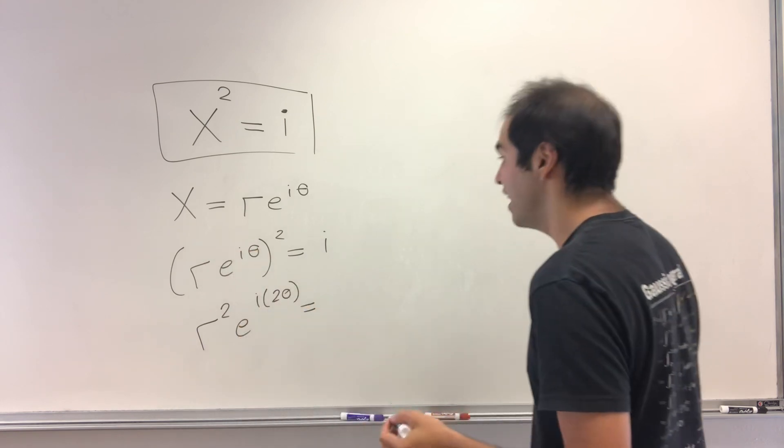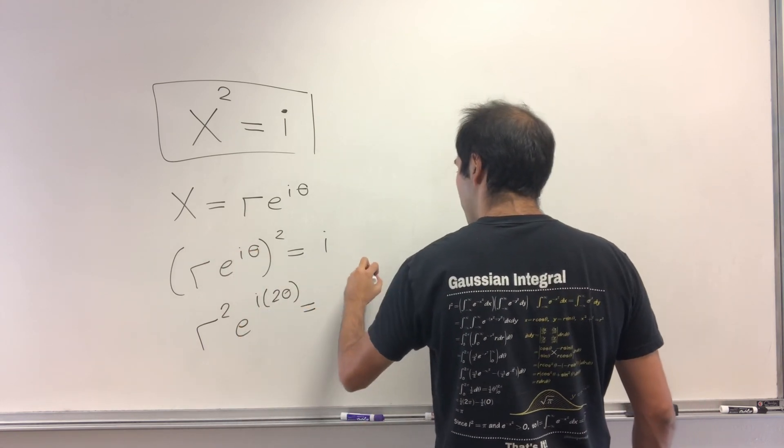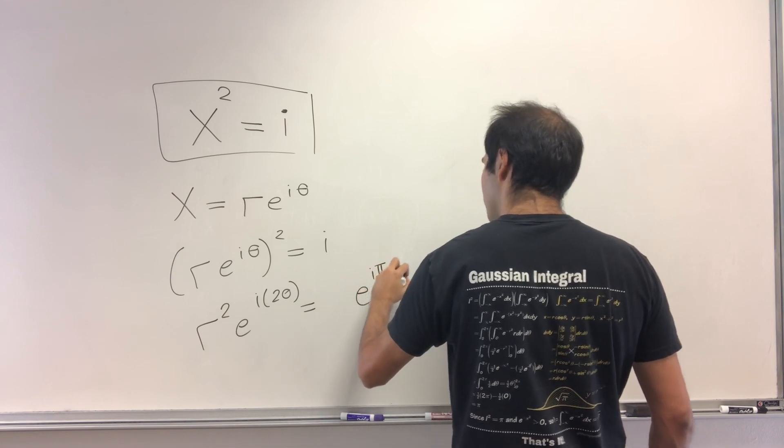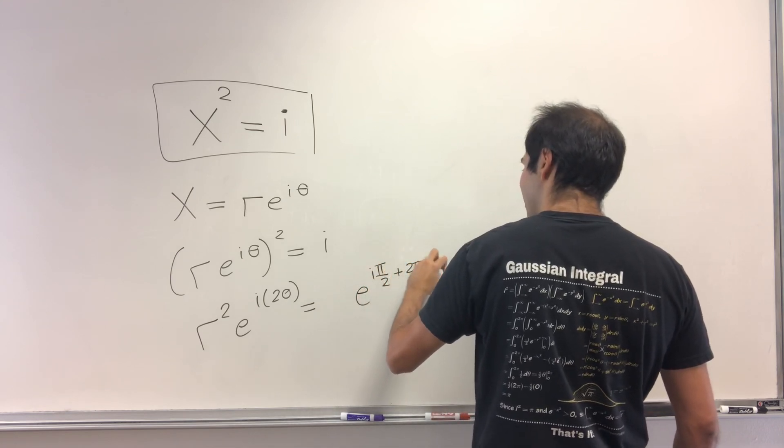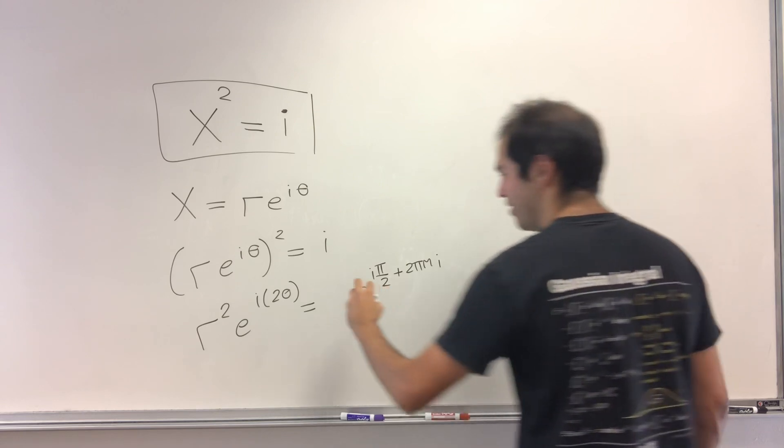But I'd like to remind you that i is e^(iπ/2) plus multiples of itself, so e^(i(π/2 + 2πm)) times 1.